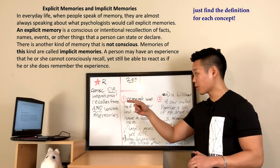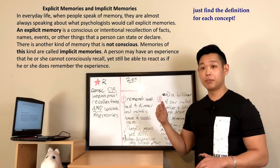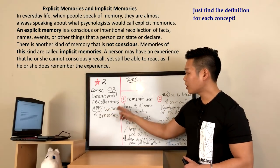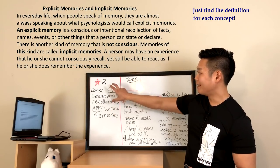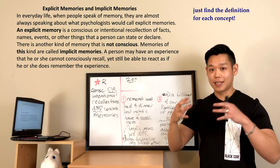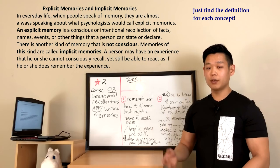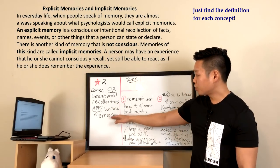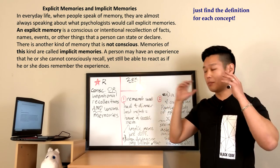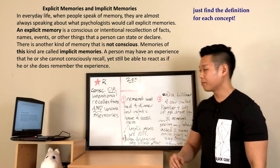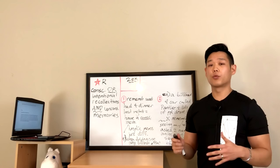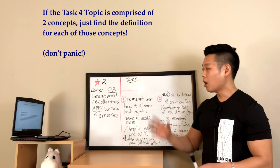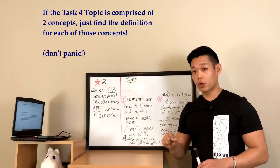Now let's find the meaning of implicit memories. In the fourth line it says memories of this kind are called implicit memories. They are another kind of memory that is not conscious — so unconscious memories. The ending sentence would be: 'To sum up, these were two perfect examples of explicit memories and implicit memories, which are conscious or intentional recollections and unconscious memories.' This reading passage was a little more difficult because the topic has two concepts, but all you have to do is figure out the definition for each one.